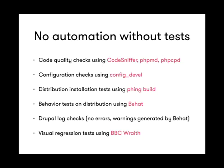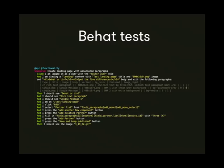We're also starting — still very experimentally — with visual regression tests, where we compare previous and next versions of the code visually and compare the percentage difference using an open source tool from the BBC called BBC Wraith. This is one of the Behat tests we have — it simulates the creation of a landing page from the perspective of an editor: you create a landing page, add a number of paragraphs, and assert that whatever you expect to see is present on the page.